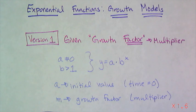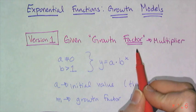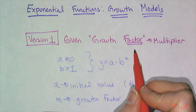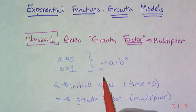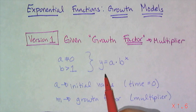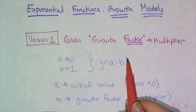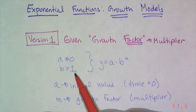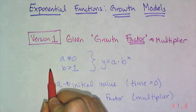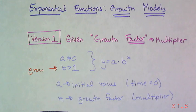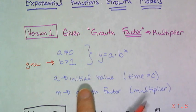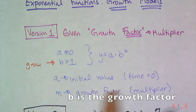The first way is when you're given a multiplier that we call the growth factor. That's when you hear that something doubles or triples or quadruples. You hear the word grows by a factor of. That's when you're going to use this equation: y equals a times b to the x, where a cannot equal zero and b has to be greater than one. This is the thing that makes the amount grow, the fact that it's greater than one. So a is the initial value or the value at time zero, and m is the growth factor or the multiplier.